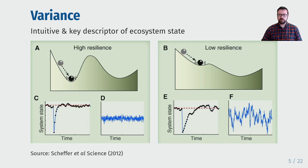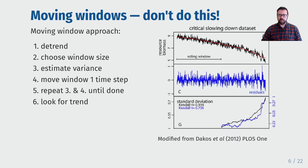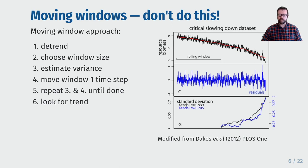Estimating variance from time series is actually quite difficult however. One way to estimate the variance of a series is by using a moving window approach. Here the analyst firstly de-trends the time series then chooses an appropriate window size, then starting from the beginning of the series calculates the variance of the observations in the window. Then we move the window along one time step and repeat until we get to the end of the time series. A trend in the resulting variance time series is estimated using Kendall's tau rank correlation.